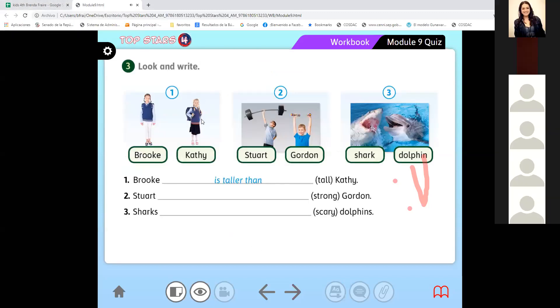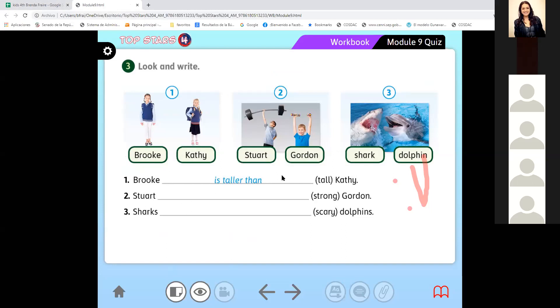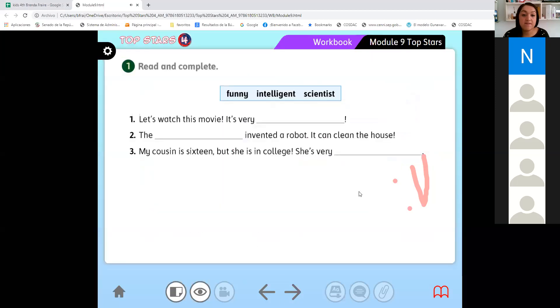'Let's continue working. Look and write. Stewart is stronger than Gordon. Sharks are scarier than dolphins. Could you please copy your answers so we can move to the next exercise. Let's check it out and give me your answers, read them and answer them for me please.'